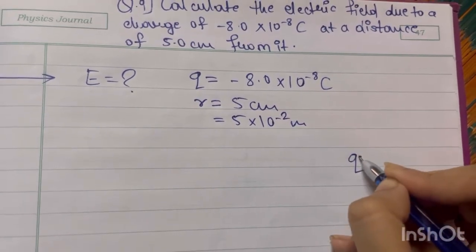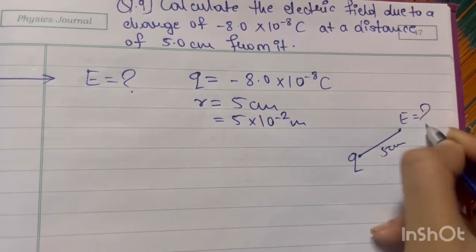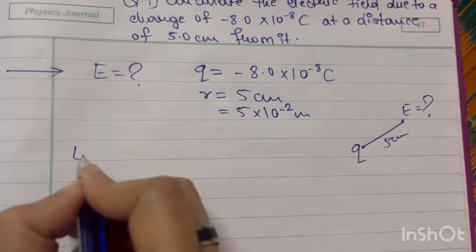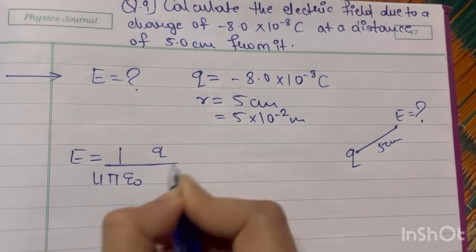Here you have a charge. From this charge at a distance of 5 cm, what will be the electric field? The formula for electric field is 1 upon 4 pi epsilon 0, q upon r square.